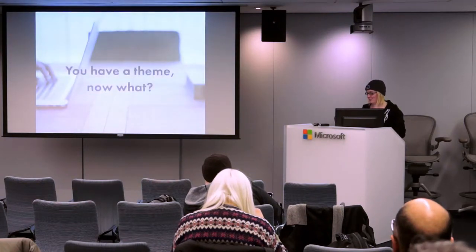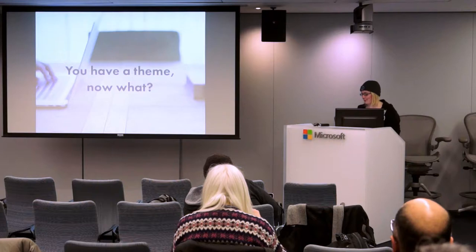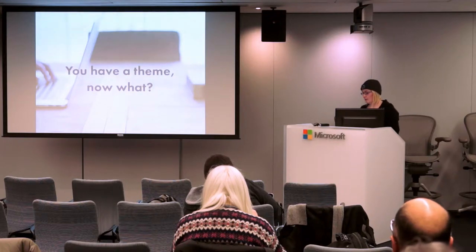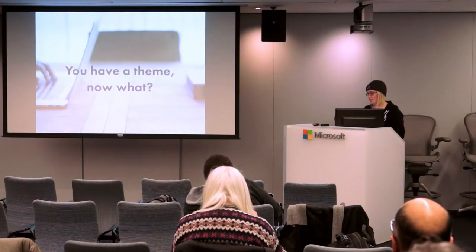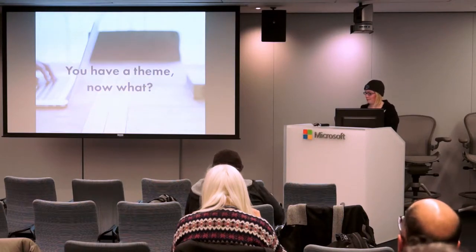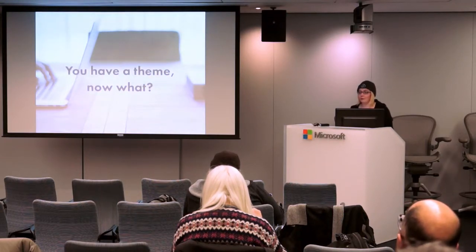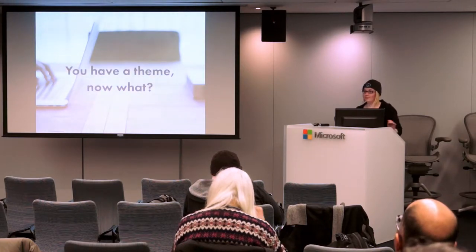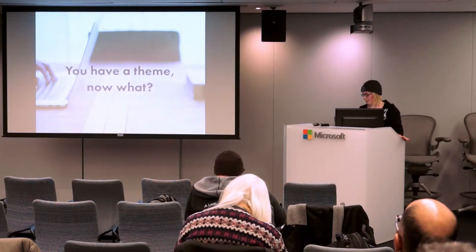So now you have a theme. You've tested it across all browsers you want to support — you should probably support all the latest ones, but use your best judgment. You have support for translations, you've tested accessibility, and you've written your documentation. So how do you get it onto WordPress.org?